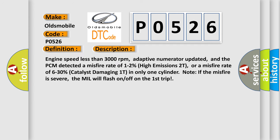Engine speed less than 3000 revolutions per minute, adaptive numerator updated, and the PCM detected a misfire rate of 1 to 2% high emissions 2T, or a misfire rate of 6 to 30% catalyst damaging 1T in only one cylinder. Note: If the misfire is severe, the MIL will flash on-off on the first trip.